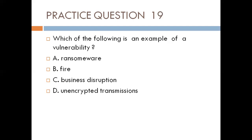Question nineteen. Which of the following is an example of a vulnerability? A. Ransomware, B. Fire, C. Business disruption, D. Unencrypted transmission. A vulnerability is a weakness that can be exploited. Ransomware is a threat. Fire is a threat. Business disruption is an exposure and an outcome of risk. So leaving us with D — unencrypted transmission is a vulnerability that can be exploited. The best answer is D.